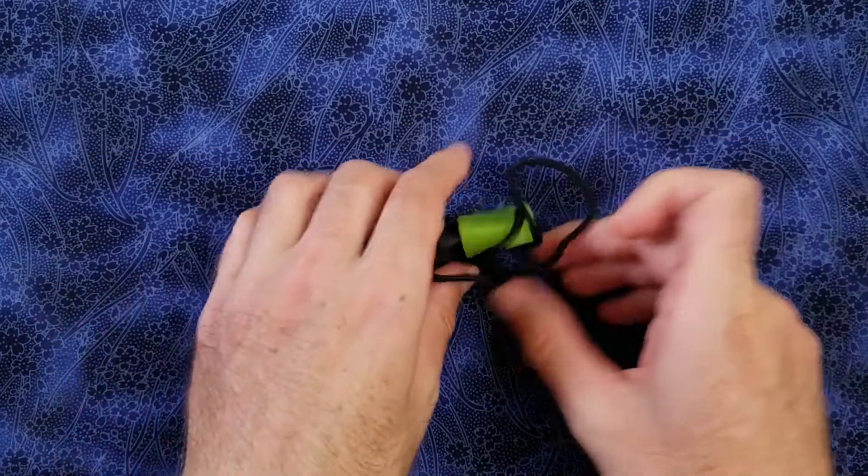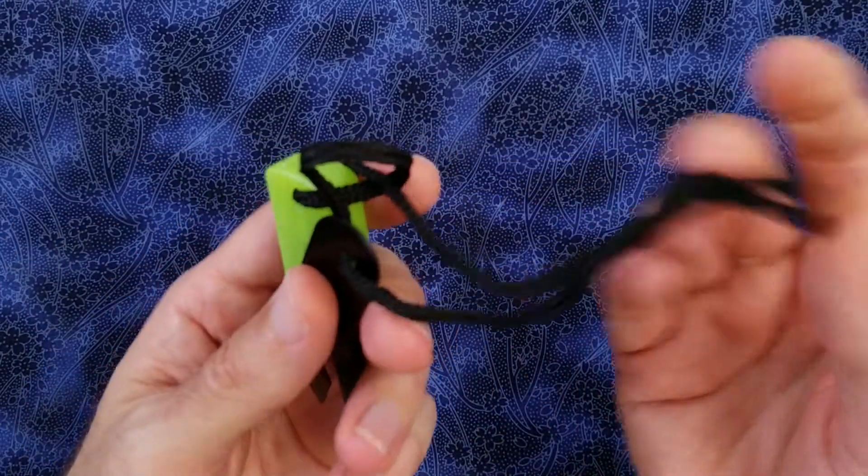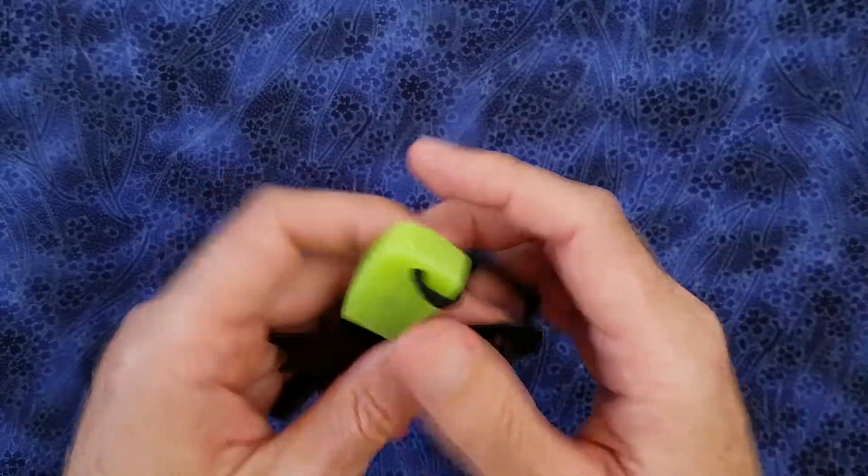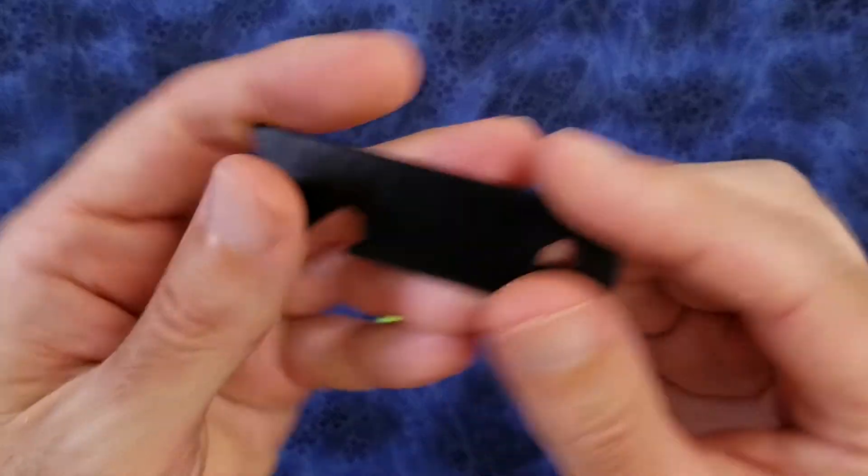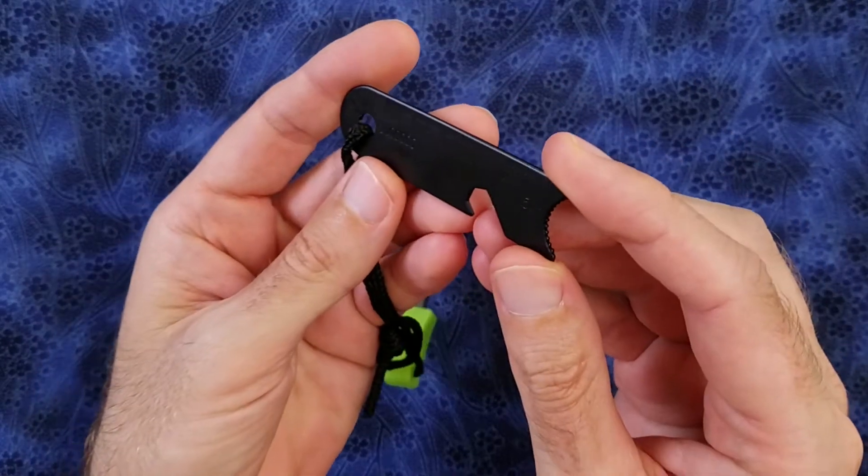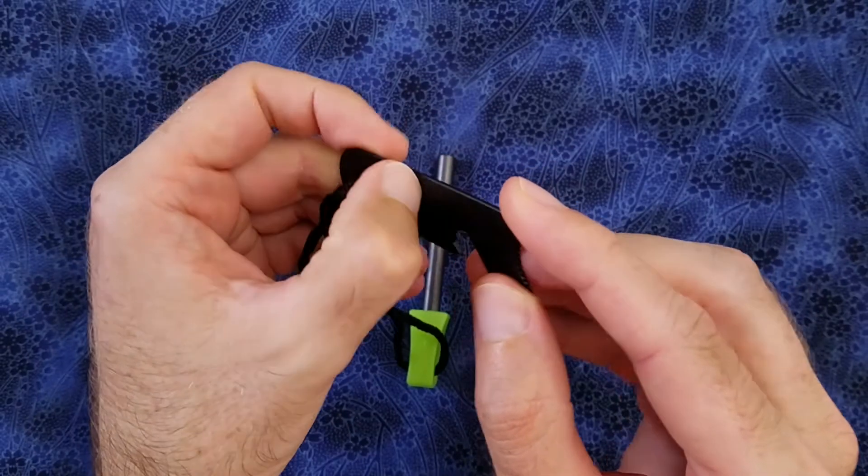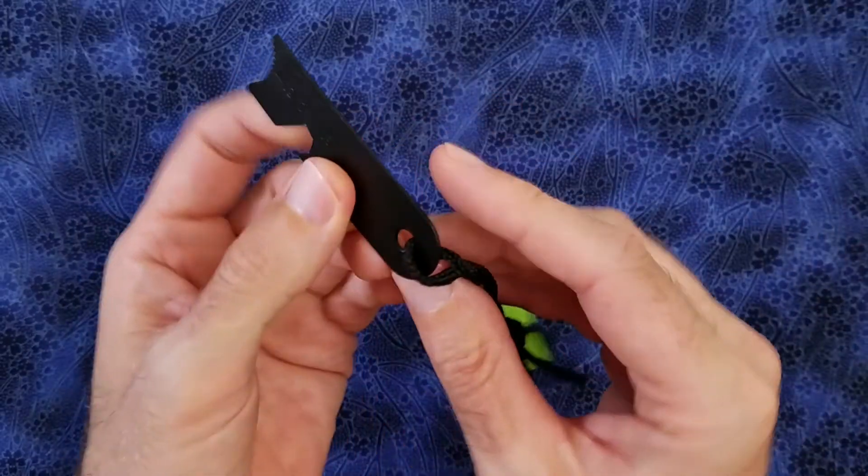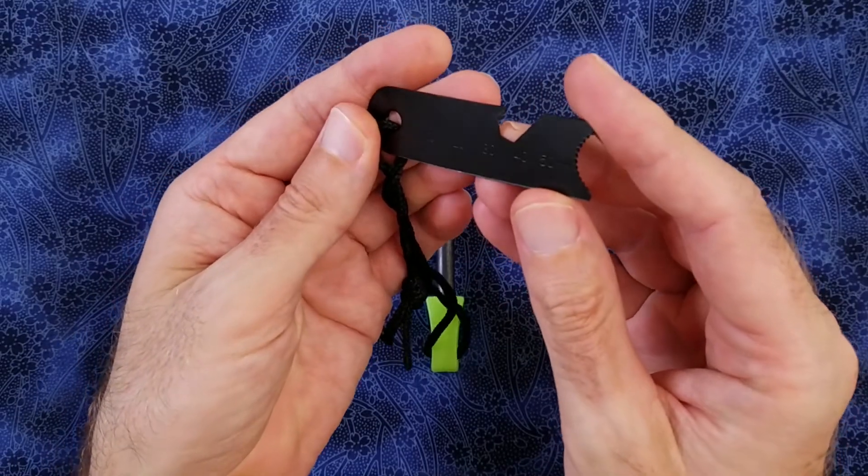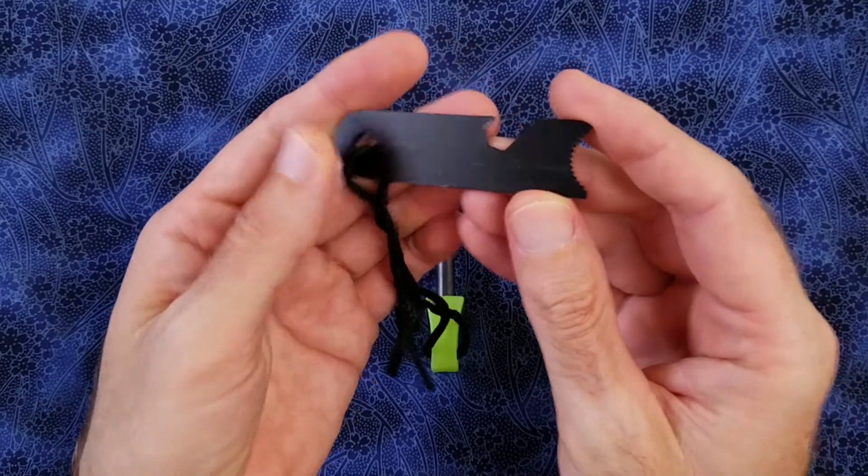It comes with a small lanyard cord made out of what feels to be nylon or polyester. There is a black coating on the striker, and the striker is also marked on both sides with a centimeter ruler that goes up to about 50 millimeters.